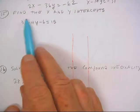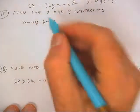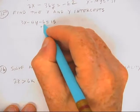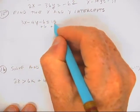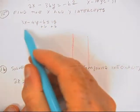This is pretty easy. Find the x and y intercepts. It'll help if I add 6.